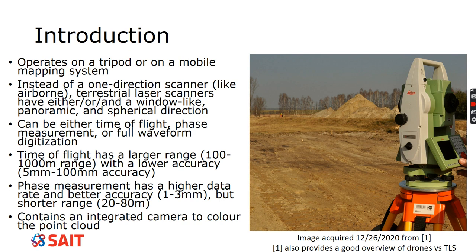Time of flight scanners have a much longer range than phase measurement scanners — generally between 100 to 1000 meters. In fact, a student once captured buildings downtown from SAIT campus because the air was so clear. The accuracy is lower at long range — about 10-centimeter accuracy at 1000 meters — but up close it's about 5-millimeter accuracy.